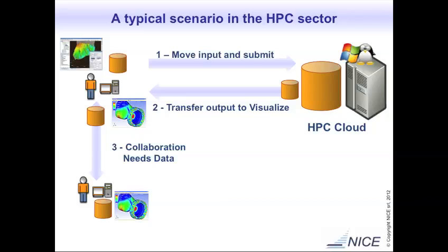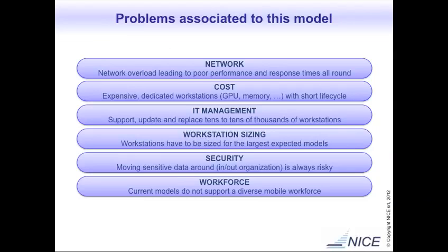The data is growing and the network is not going to grow as quickly, especially considering mobility. The first problem is the network — the data is growing faster, which delays user activity. In automotive and oil and gas, people are waiting minutes or hours to get data back from the HPC data center. The second problem is cost: workstations are bought and dedicated per user even though they're used on average only 5-15%.